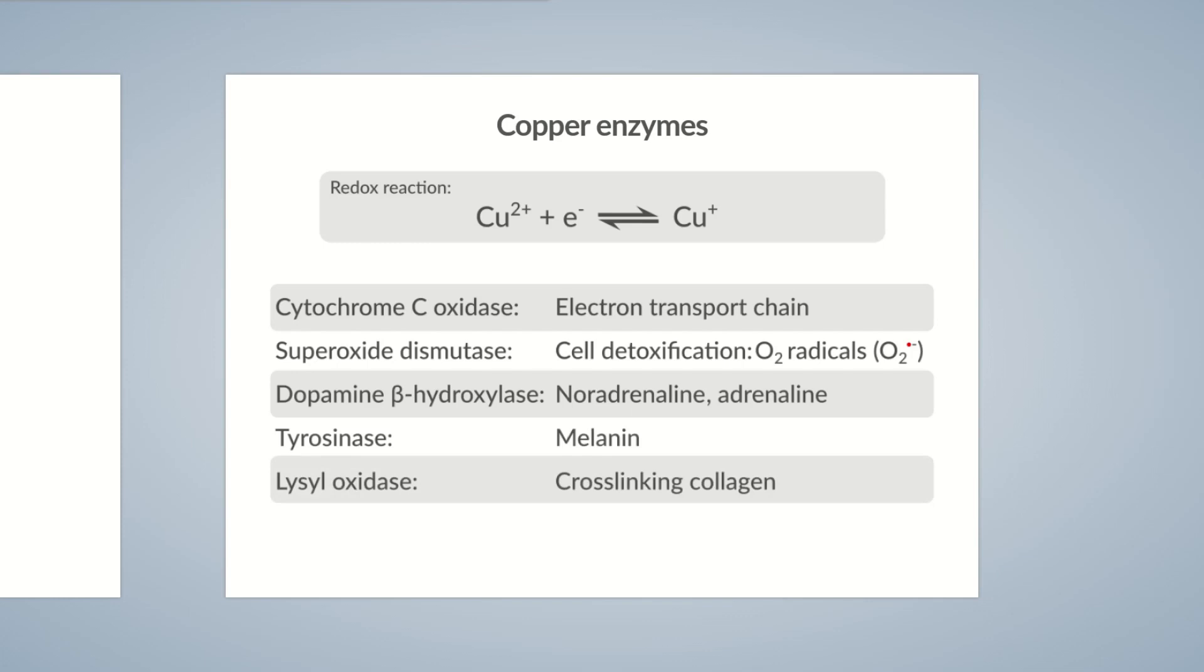Now, on to the final example. We previously mentioned that ceruloplasmin is a copper transport protein. However, it also exhibits enzymatic activity. Ceruloplasmin catalyzes the oxidation of iron from a divalent to trivalent state. It can then bind to its transport protein, transferrin.